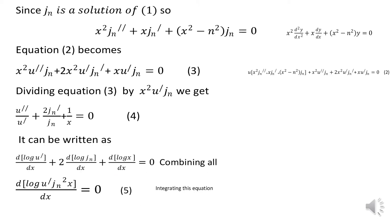Since Jn is a solution of the Bessel equation, the bracket x²·Jn'' + x·Jn' + (x² − n²)·Jn equals 0. So that entire term vanishes, and we are left with only: x²·u''·Jn + 2x²·u'·Jn' + x·u'·Jn = 0.